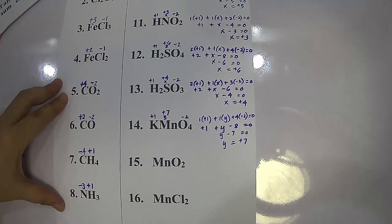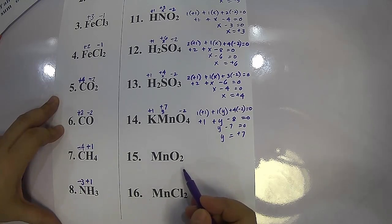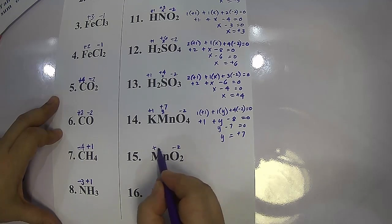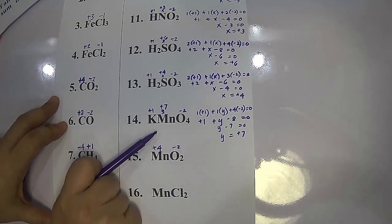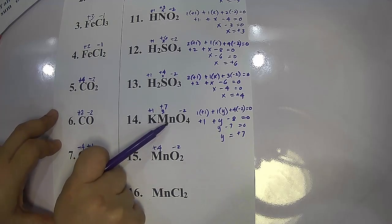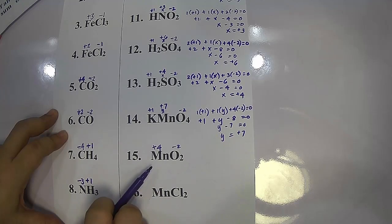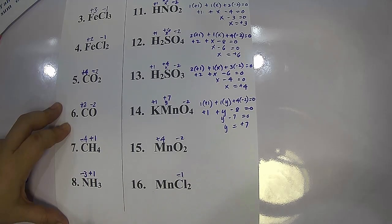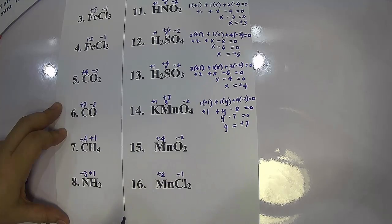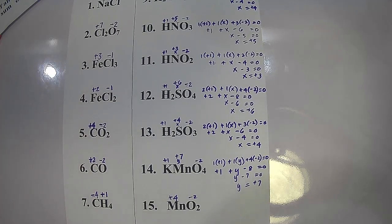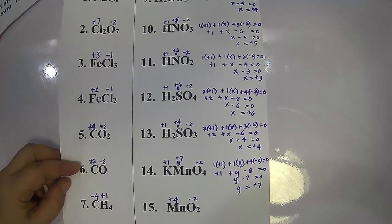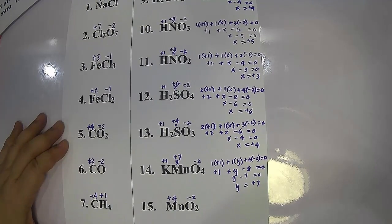For the binary compound manganese dioxide (MnO₂), oxygen is negative two; to make the sum equal to zero, manganese is positive four — compared to positive seven in potassium permanganate. For manganese chloride (MnCl₂), chlorine is a 7A halide with negative one; by the crisscross method, manganese is positive two. That is how we assign oxidation numbers to elements in given compounds.